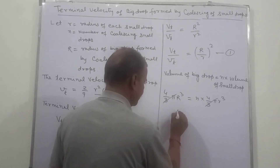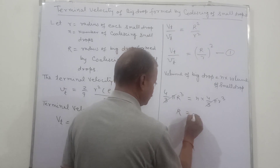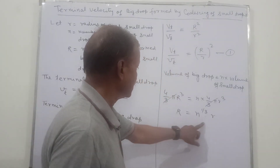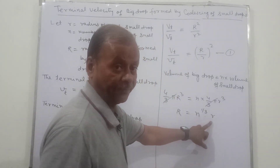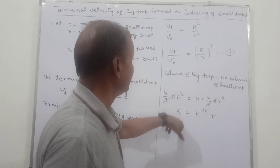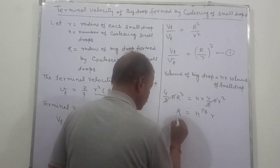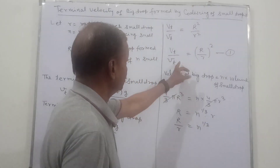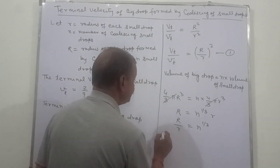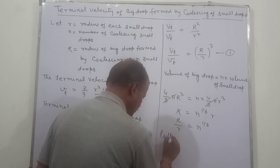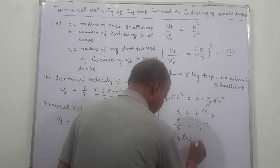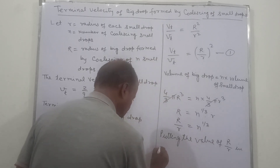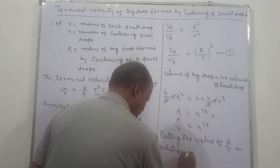So we have R equal to N^(1/3) times small r. This is the relation between the radius of the big drop and the small drop. Now we put this value into equation 1, so R/r equals N^(1/3).